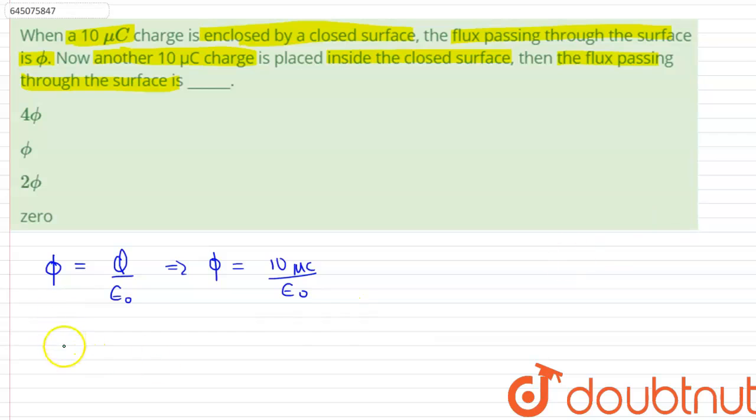Now in case 2, when 10 micro coulombs is more added, we can see that phi dash is equals to q divided by epsilon naught. This implies that phi dash is equals to 10 plus 10 divided by epsilon naught, and this is micro coulombs.